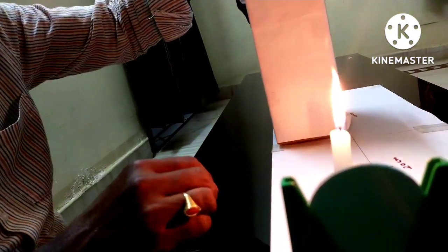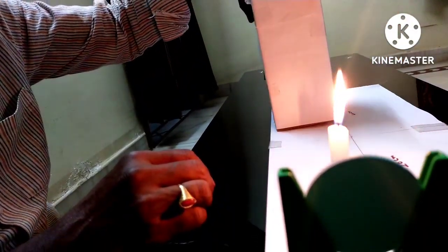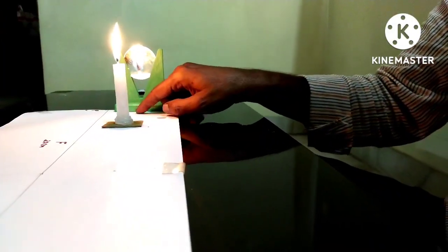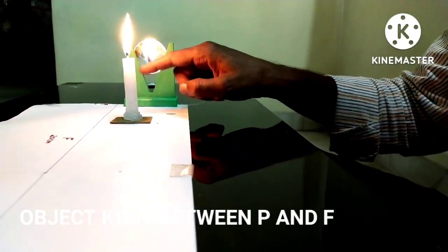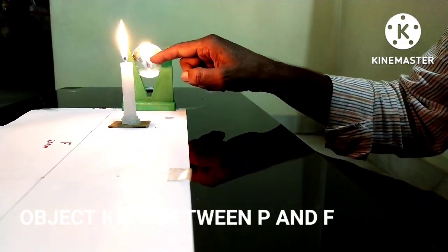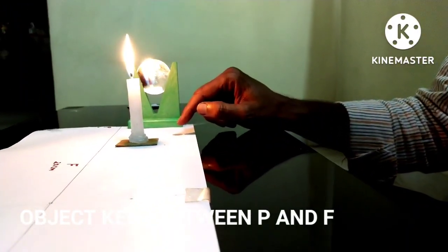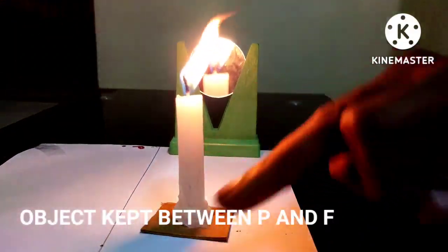Here I kept candle between P and F. Object kept in between P and F. See the image formation. It is behind the mirror, enlarged, erect and virtual.